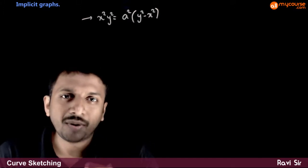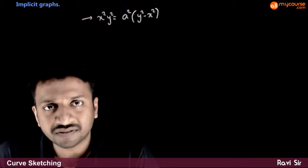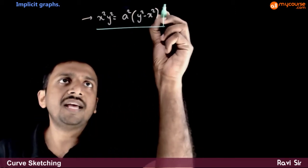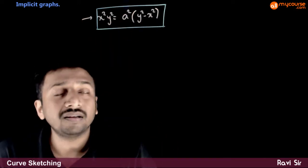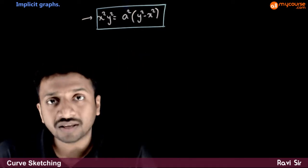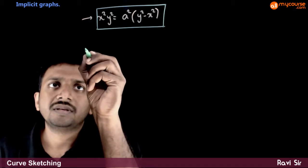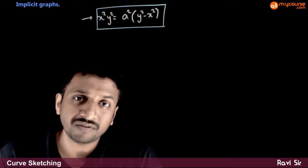Now let us try to analyze some implicit function graphs. Let us take the function x²y² = a²(y² - x²). If you are asked to draw the graph of this, first what we do is we try to find some special points.